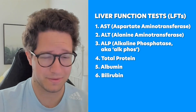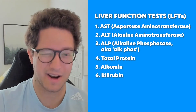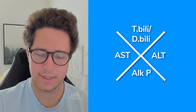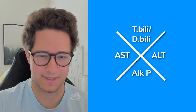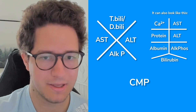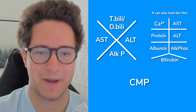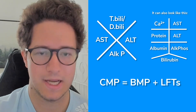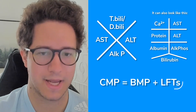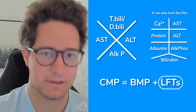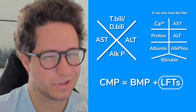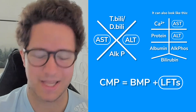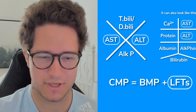When you're writing your notes on rounds, that's a lot of things to remember — a lot of different tables you might have to make. List it out on a diagram just like this. Remember, a CMP is like a little math equation: it is a BMP plus your liver function tests. If you ever just hear someone colloquially say LFTs or liver function tests, they usually mean the AST and ALT, the liver enzymes, but technically it includes everything just mentioned.